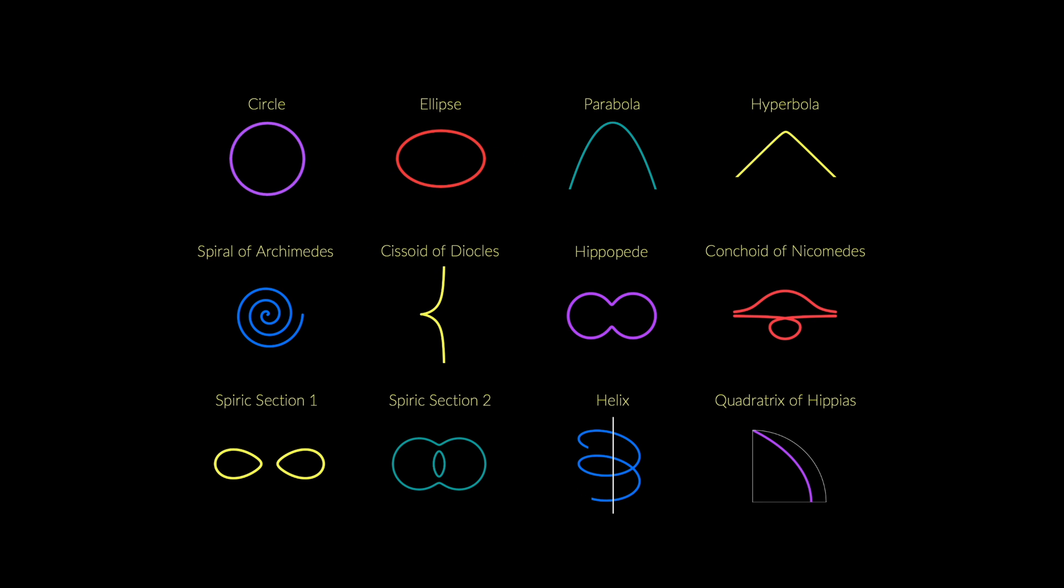Compare this to the circle, for example, which is defined as the shape that consists of all the points in a plane that are equidistant from a given point. Similarly, all the other curves that were studied in ancient Greece have clear mathematical definitions.